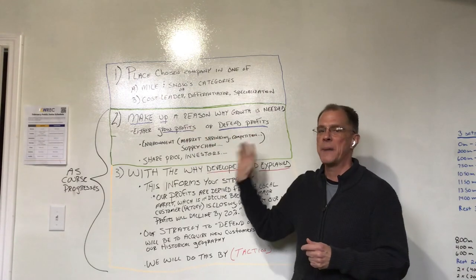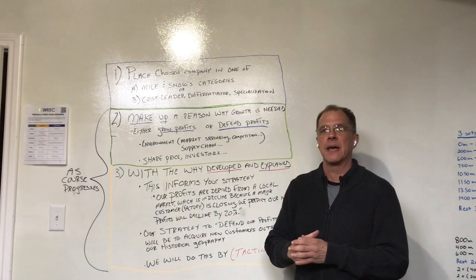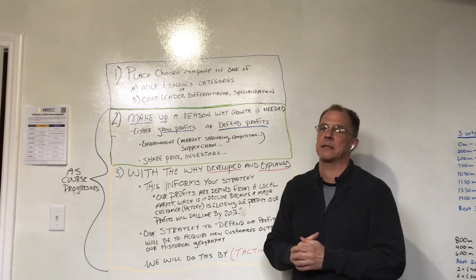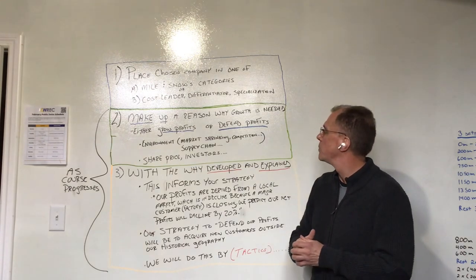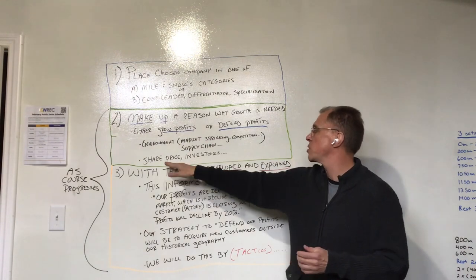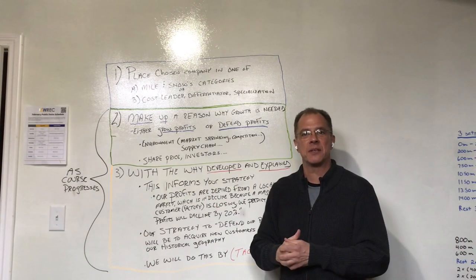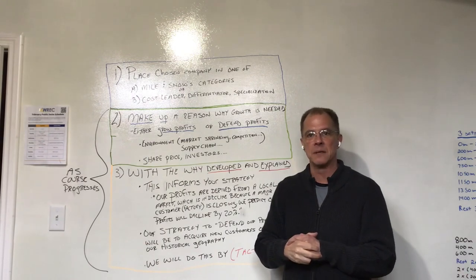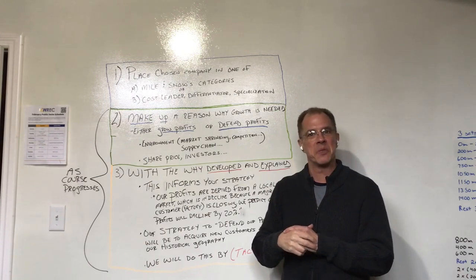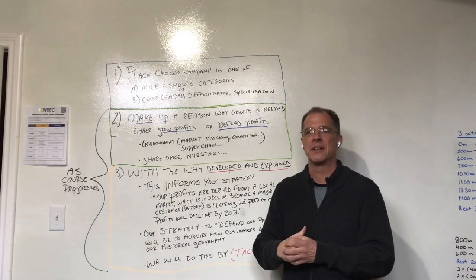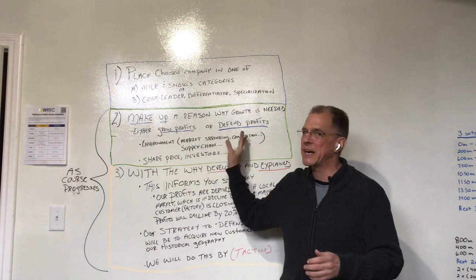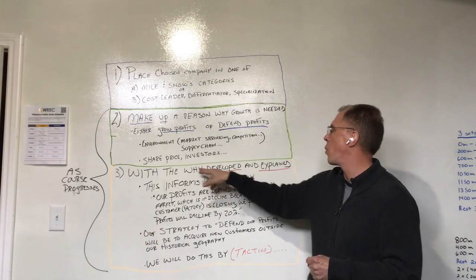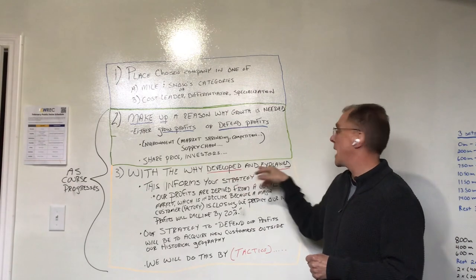I might read it—obviously, you know, Tesla is not defending profits. Tesla's growing. So I may take a quick look at the company you picked and decide whether it makes sense that it fits in the categories, but I'm not gonna look at it very critically. So if you're growing profits, it could be because the CEO has told the VP that the share price has been declining for a long time and the board of directors is unhappy with the CEO and they might fire him. Just make it up.